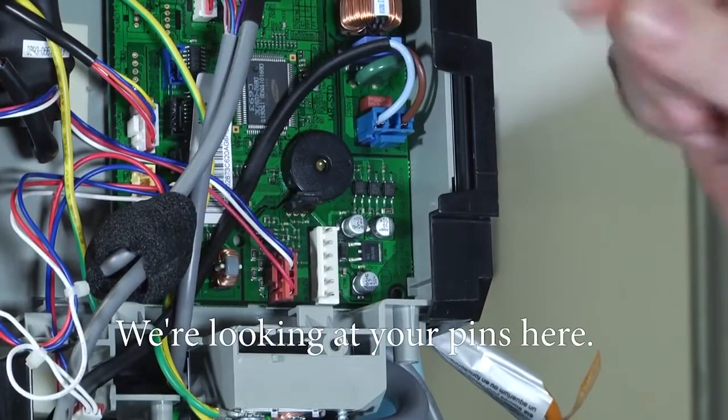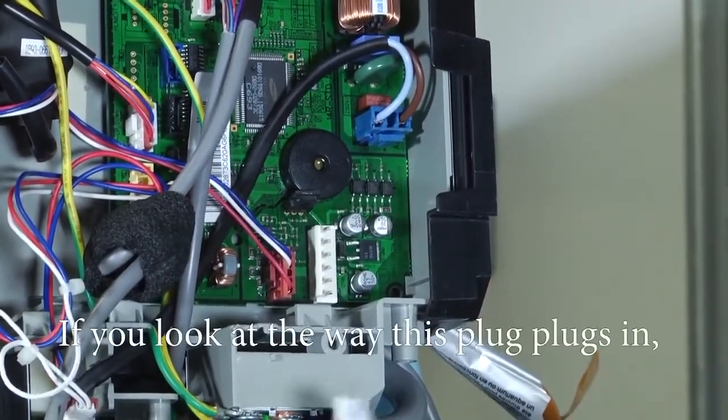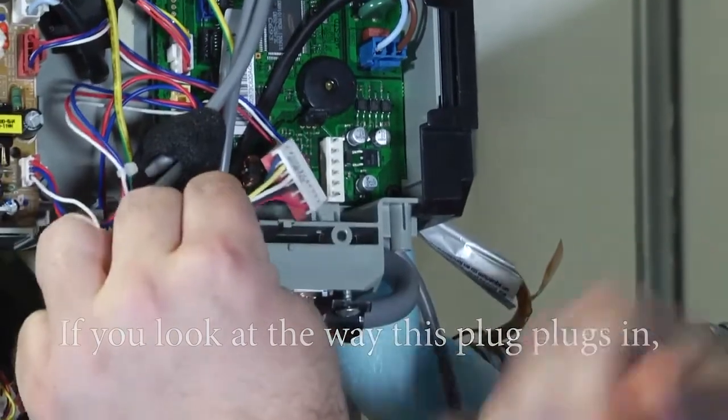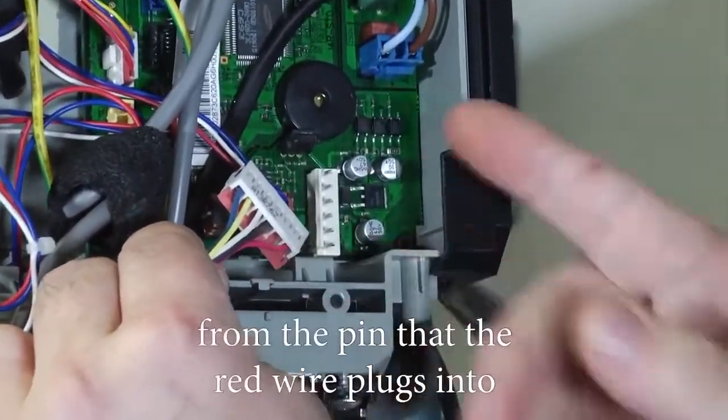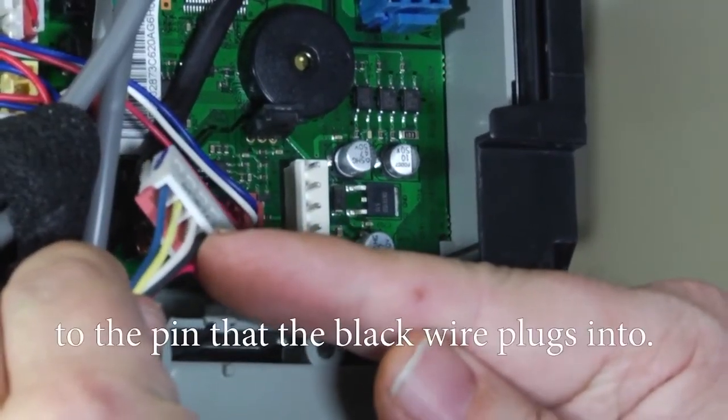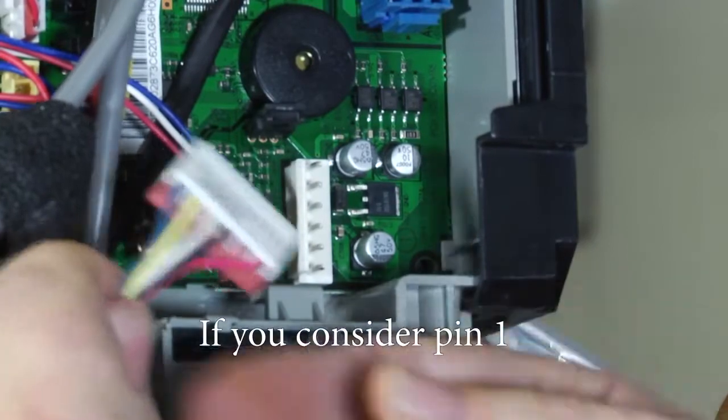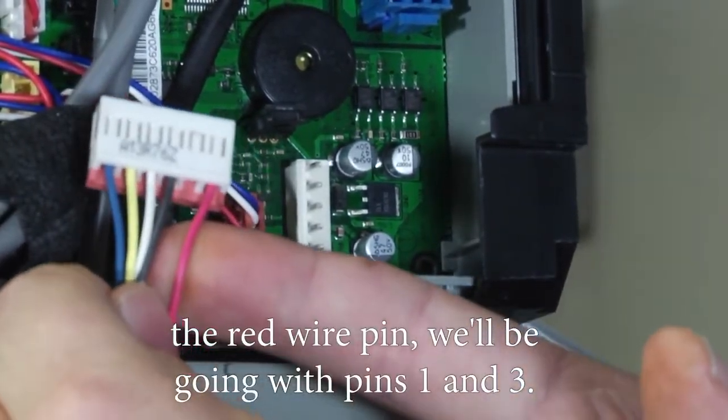We're looking at your pins here. If you look at the way this plug plugs in, we're going to be measuring DC volts from the pin that the red wire plugs into to the pin that the black wire plugs into. If you consider pin one the red wire pin, it will be going with pins one and three.